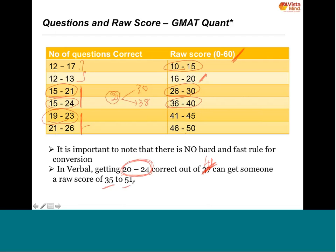Out of the 41 questions in verbal ability, if you can get between 20 to 24 correct — just about more than half — you can get a raw score between 35 to 51. With 24 to 27 correct, not having too many consecutive mistakes, not getting the first few questions wrong, and not leaving questions unanswered, you can get as high as 50 out of 60 raw score in verbal ability. Three key rules: get the first 7-10 questions right, avoid consecutive mistakes, and answer every question.